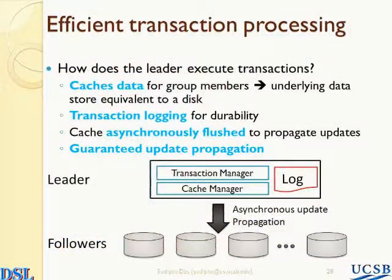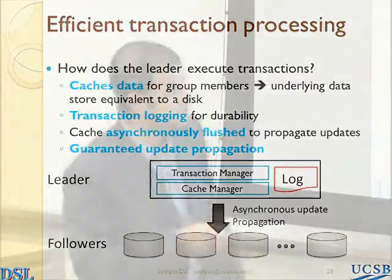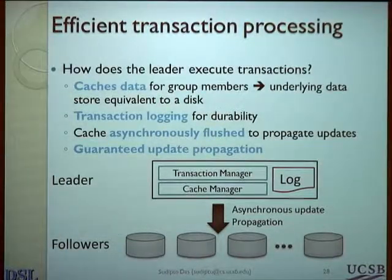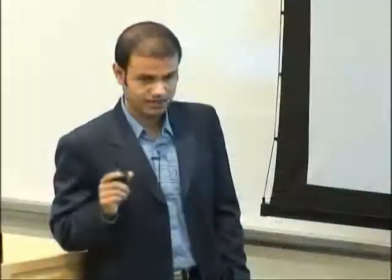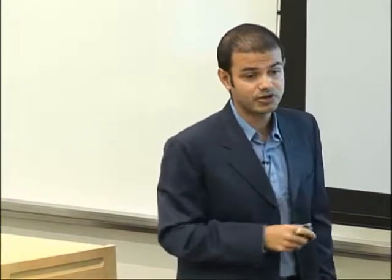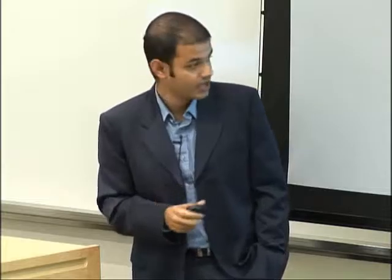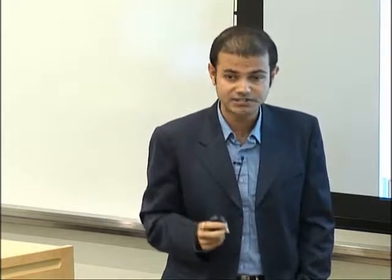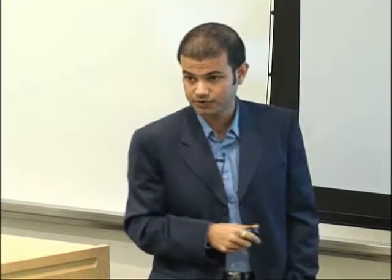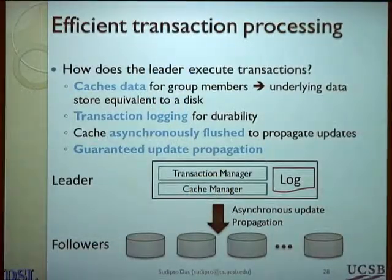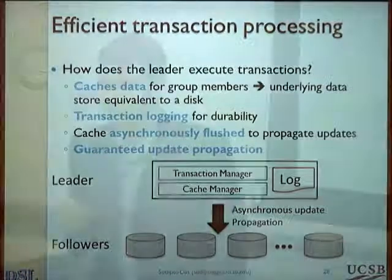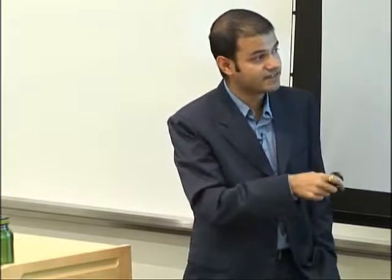How do I efficiently execute transactions? Once everything is at one node, every node has a transaction manager that executes transactions on the group. Because the leader has unique access to the data items, I can aggressively cache the data items at the leader. There is a cache manager that caches all the data — the actual data is still with the followers. All the transaction updates are local to the cache. To guarantee persistence of these updates, I use a log at the transaction manager that logs all the transactional updates, so that I can deal with failures of the transaction manager and recover from the log.